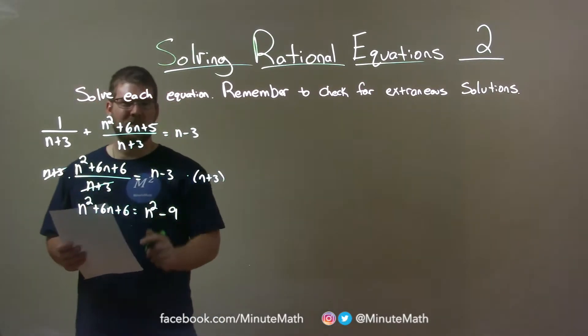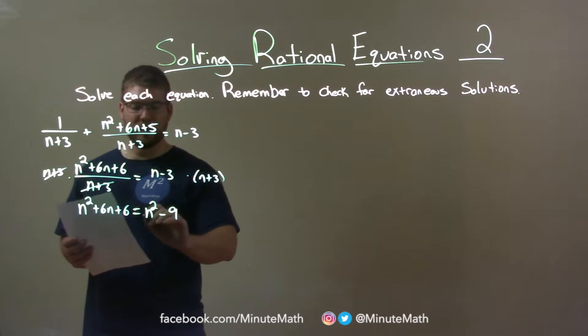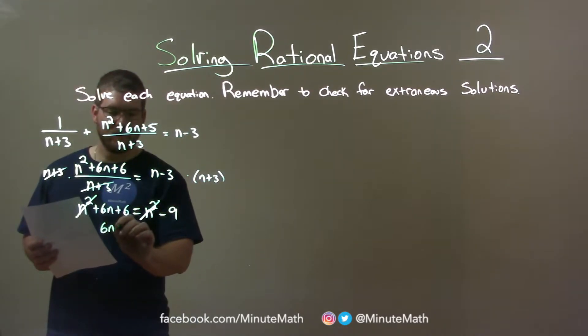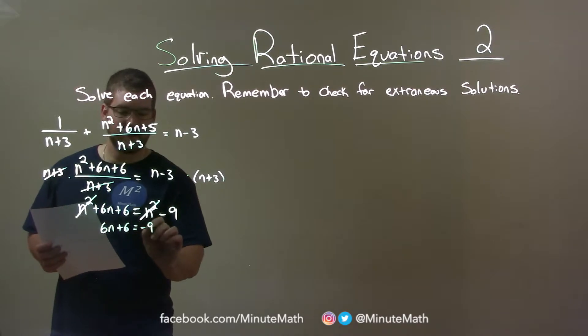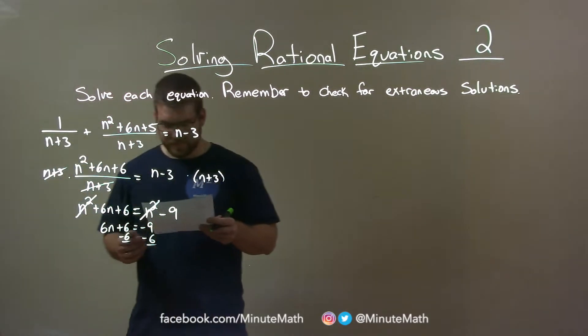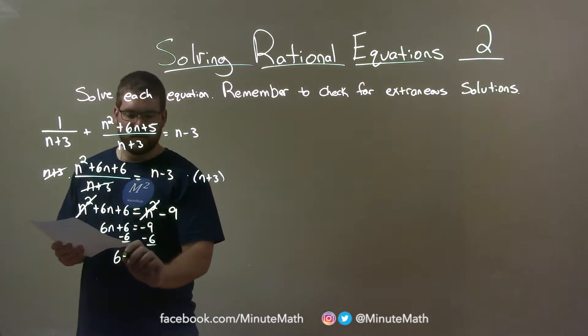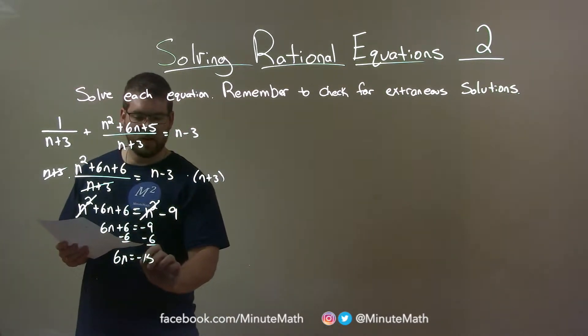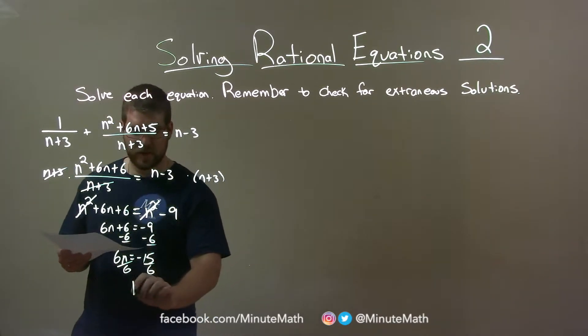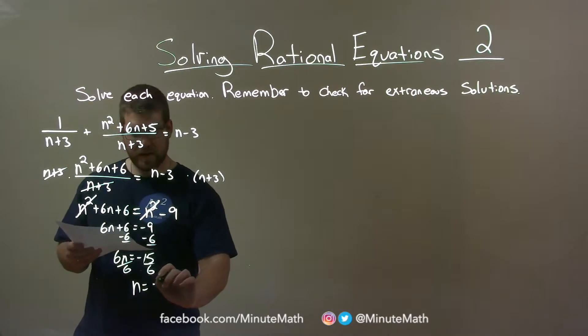Well, I see that n squared is on both sides of the equal sign, positive. Cancel that out. So, now we're left with 6n plus 6 equals negative 9, pretty simple. Minus 6 from both sides, then we get 6n equals negative 15. Divide by 6 on both sides, and negative 15 divided by 6 simplifies to n equals negative 5 halves.